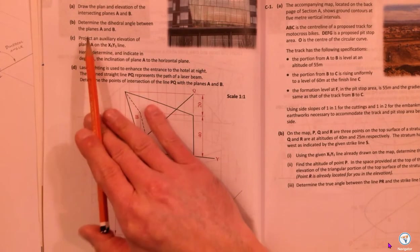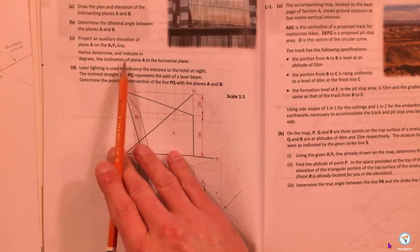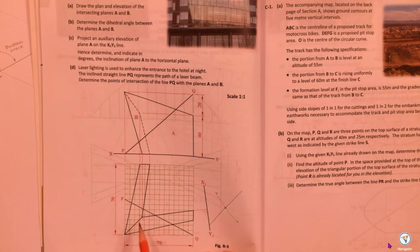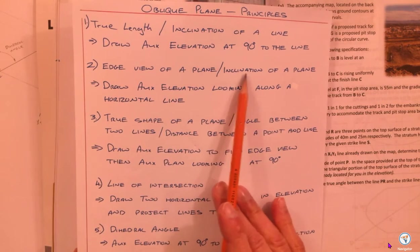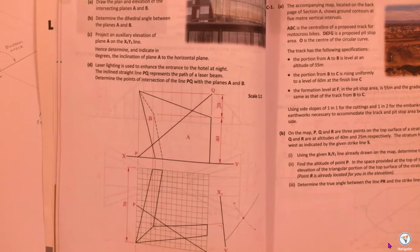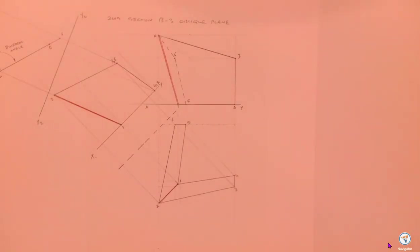The next part asks: project an auxiliary elevation of the plane on the X1Y1 line, hence determine and indicate in degrees the inclination of plane A to the horizontal plane. They've given us an X1Y1 line. When I look at that line in elevation it's horizontal. So they're asking for an auxiliary elevation looking along a horizontal line - which, back to our principles, is an edge view of a plane. Edge view gives the inclination - auxiliary elevation looking along a horizontal line. If you know your principles, you'd read that immediately.